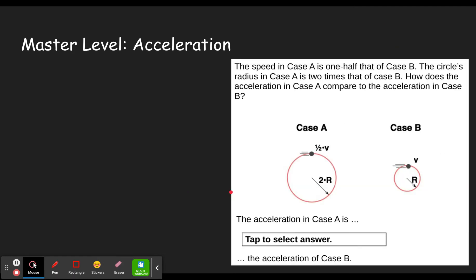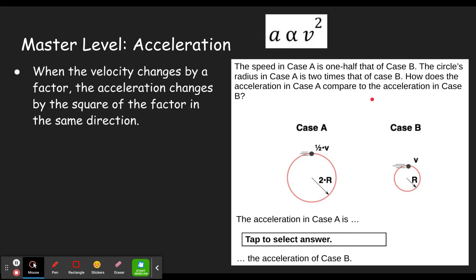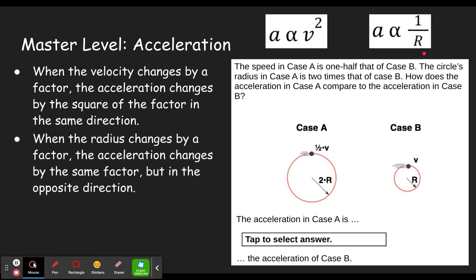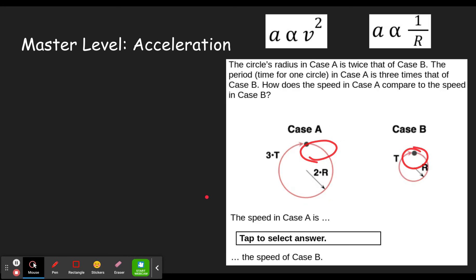Let's move into the problem. It's a similar setup — you're told how the speed and radius change between case A and B, and asked how the acceleration compares. We need to remember our two relationships: the quadratic relationship means when velocity changes by a factor, the acceleration changes by the square of that factor in the same direction. The inverse relationship means when the radius changes by a factor, the acceleration changes by the same factor in the opposite direction.